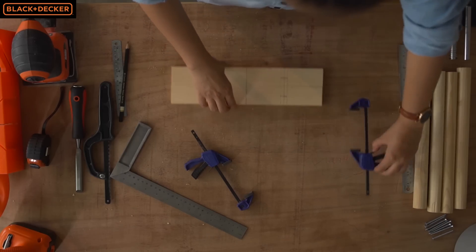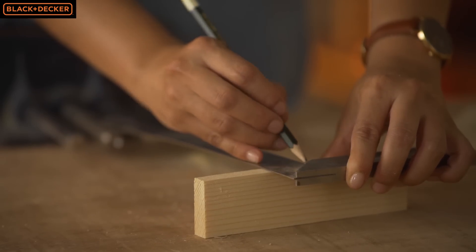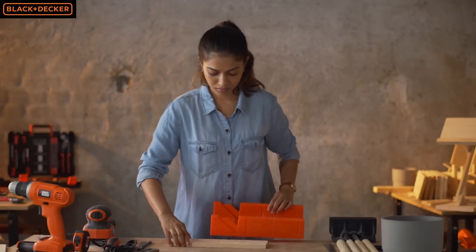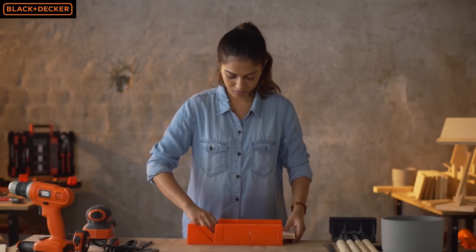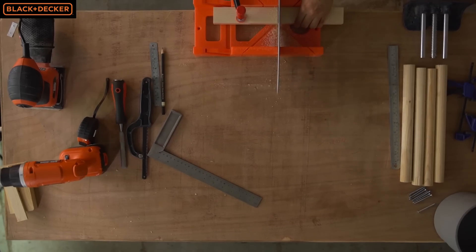I'm removing the clamp and transferring the marks on the half inch edge. Next I'm cutting out each piece using my Black & Decker hand saw.